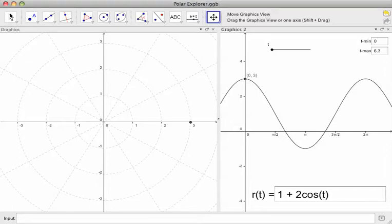This video is just to give you an idea of what this file is doing so that you're understanding it. So what we're going to do is create the polar graph of whatever is down here. So right now it's 1 plus 2 cosine of t.